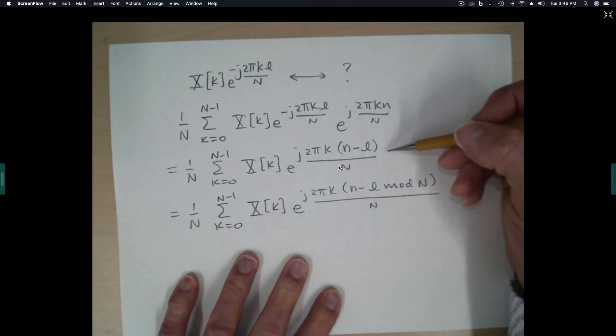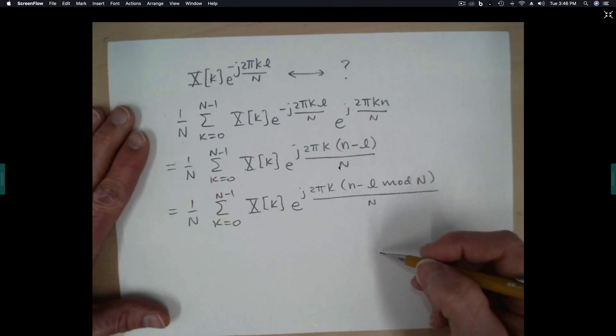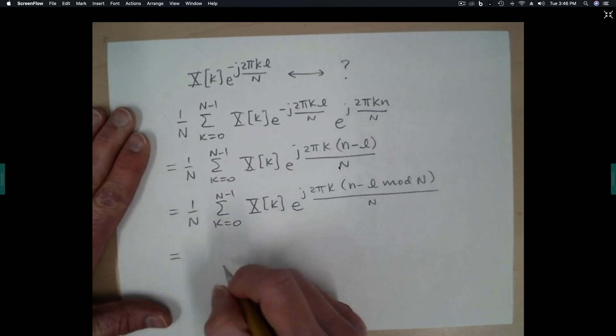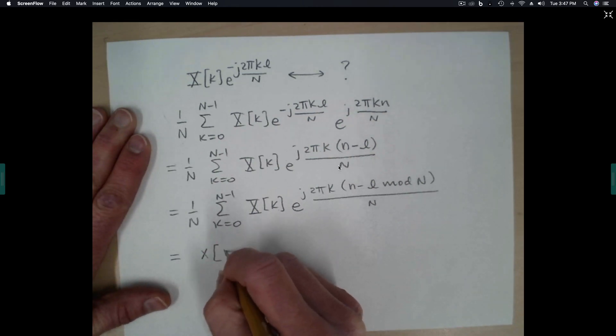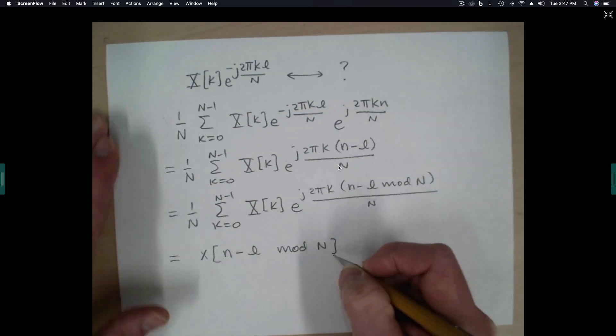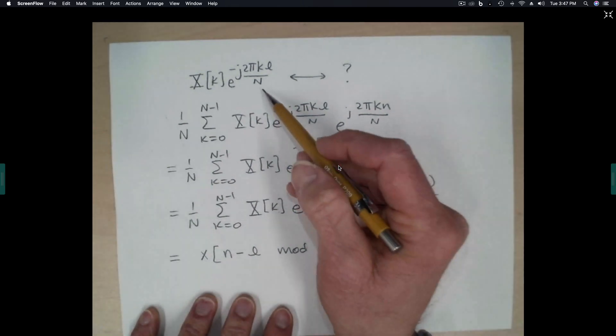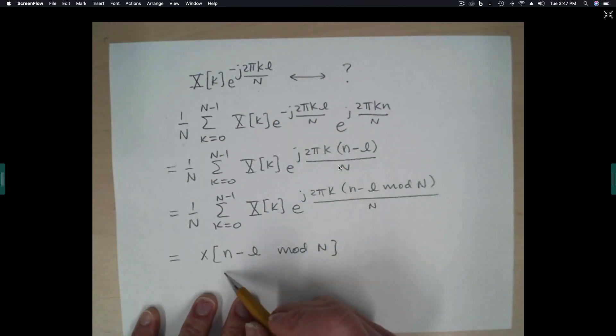So we can always put in a modulo n wherever we need one or remove a modulo n wherever we need to. And this tells us that we now recognize that this is the DFT, or this is just x evaluated at time n minus l modulo capital N. So again, if we multiply in the frequency domain by a complex exponential, then in the time domain we end up doing a circular time shift.